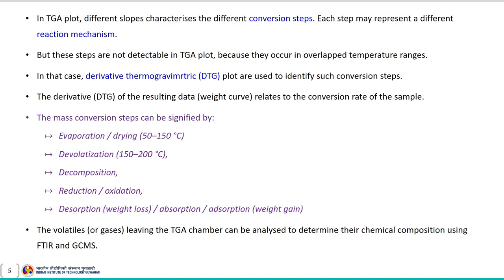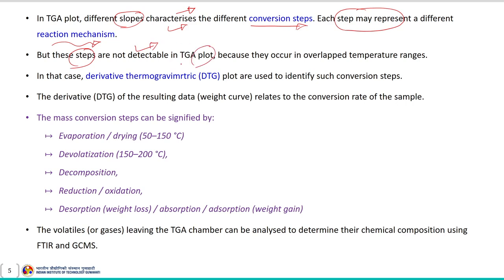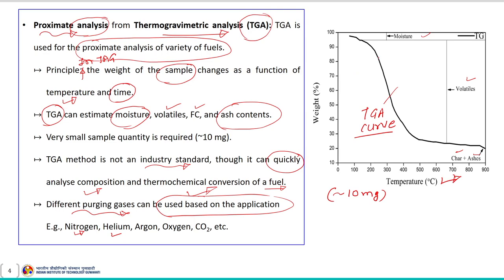However, there are certain issues associated with the TGA plot, because in the TGA plot, different slopes characterize different conversion steps, and each step may represent a different reaction mechanism depending on the characteristics of the given fuel. If the fuel has different constituents, each step may represent a different reaction mechanism. These steps are not easily detectable in a TGA plot because they occur in overlapped temperature ranges.